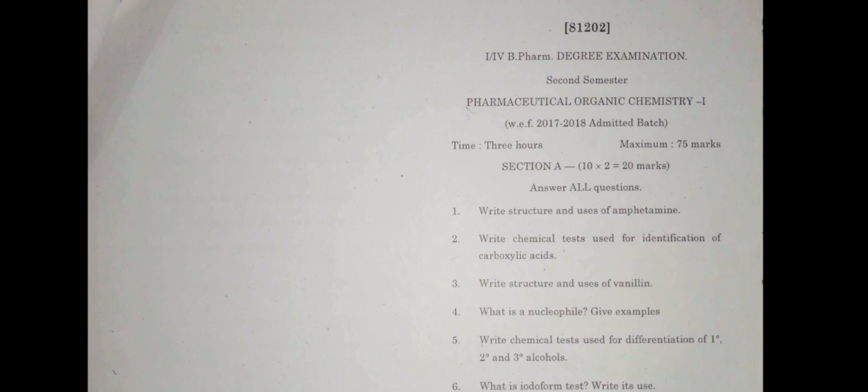Write the structures and uses of amphetamine. Remember, amphetamine is called aliphatic amines classification. Structure and uses are also available. Write the chemical test used for identification of carboxylic acids. You need to choose the unit file, the test of carboxylic acid and also the basic test of amines. The test as well as structures are also available. You have to definitely practice it and cover the 2 marks, 5 marks and 10 marks.